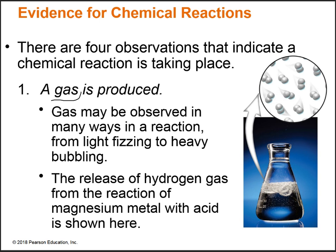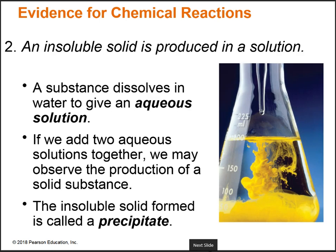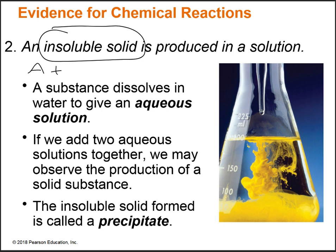That gas production is evidence that a reaction is taking place between the baking soda and the vinegar. Keep in mind you're not going to observe all of these for every single chemical reaction, but you'll see at least one. The second piece of evidence is the formation of an insoluble solid. If you take solution A and solution B, mix them together, and you make a solid, that is evidence of a chemical reaction — it's also called a precipitate. In this picture you can see the yellowish stuff; that's the precipitate.